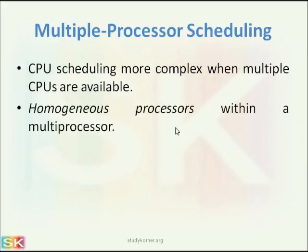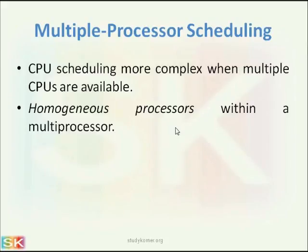Moving on to multiple processor scheduling — if we have multiple processors, how will scheduling be performed? CPU scheduling is more complex when multiple CPUs are available, because it is easy to implement a scheduling policy on a single CPU since there is only one resource shared among multiple processes. If we have multiple processors in our system, we have to keep track of all the processes running on different CPUs as well.